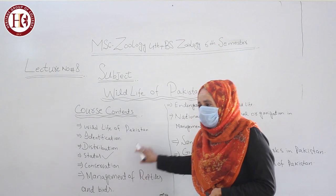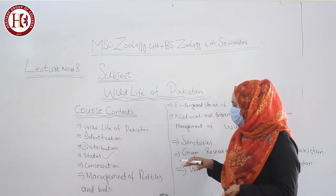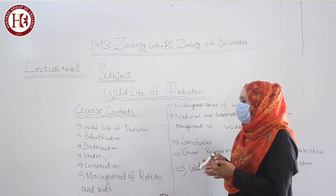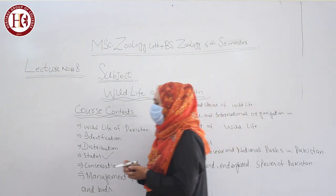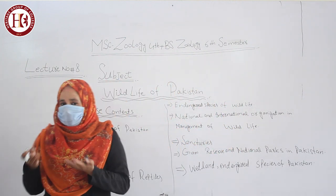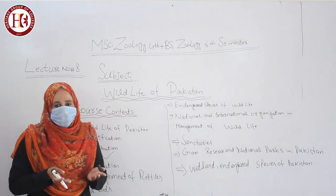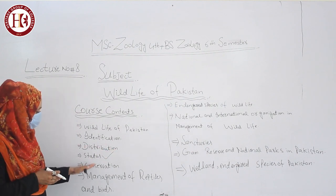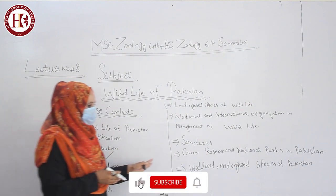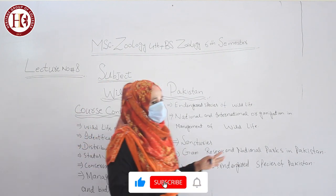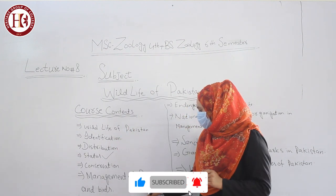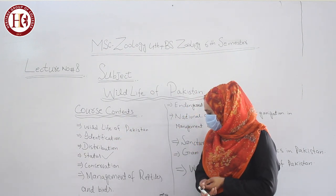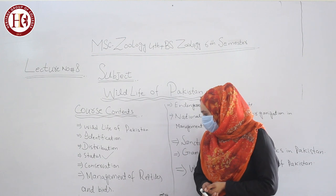After status comes conservation. The indigenous species that remain — how do we conserve them, how do we protect them, how do we save them from threats? Hunting and poaching must be completely banned according to government rules for the conservation of wildlife species in Pakistan.